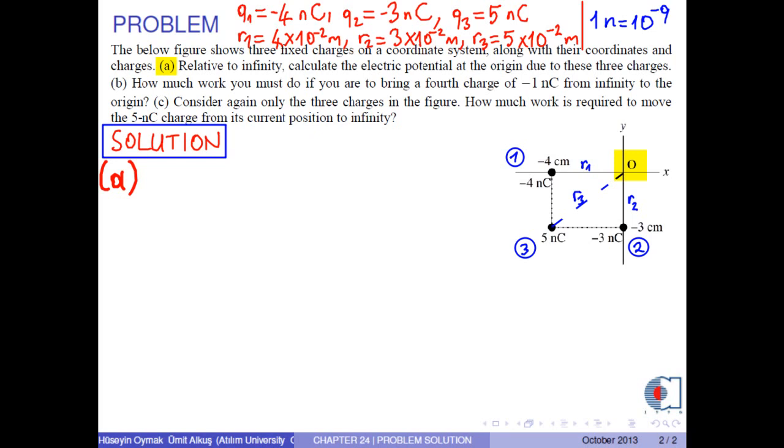Relative to infinity, where the potential is 0, the electric potential at the origin due to charge Q1 is K times Q1 over R1, and because of charge Q2 is K times Q2 over R2. Finally, due to Q3 is K times Q3 over R3.